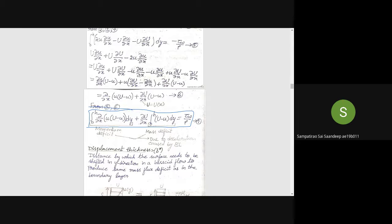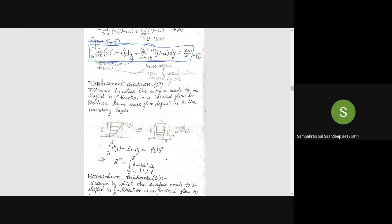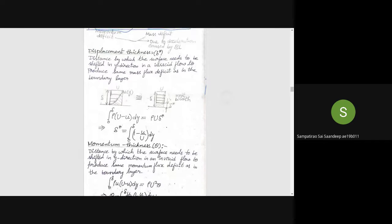Now these two terms have specific meaning. One term relates to the momentum deficit and other term relates to the mass deficit which is due to the dissolution caused by the boundary layer.